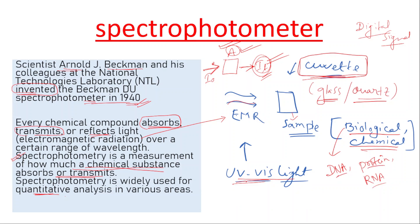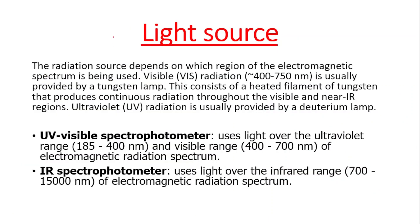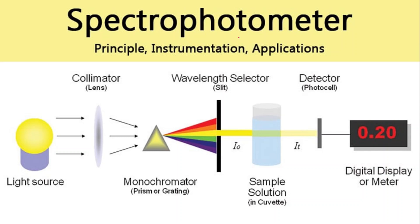We have a light source in the visible spectrum. The UV and visible range is around 400–700 nm. For IR spectrophotometry, the radiation spectrum used is 700 nm to 5000 nm. This is the principle of the spectrophotometer.